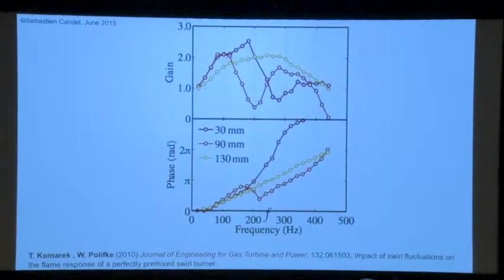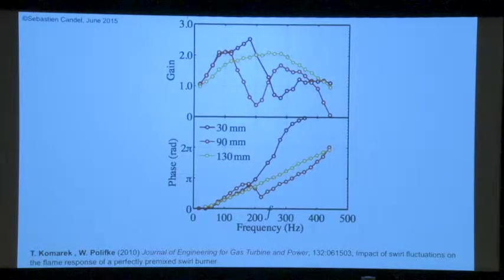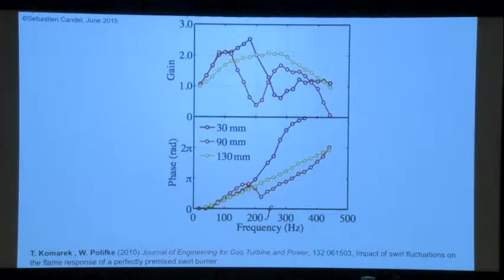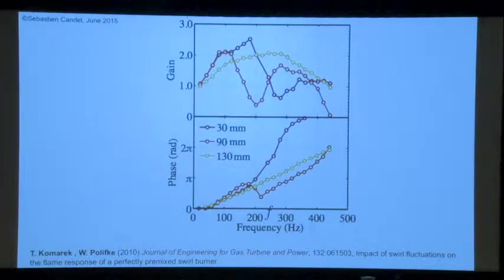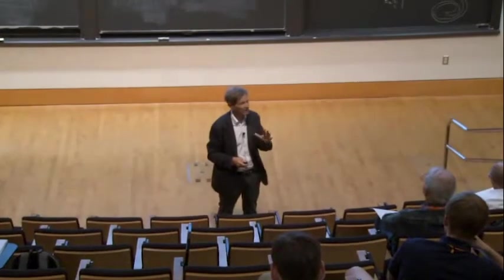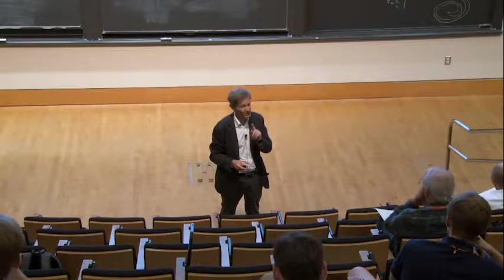What Komarek and Polifke did was move the position of the swirler inside the duct, and they see that this changes the gain. If the swirler is at 130 mm, you have essentially something like that. If at 90 mm, you have something like that. And if at 30 mm, it's like that. Even their phases are changing because of that. They were suspecting there was a convective vorticity wave, but they were not giving the amplitude of that wave. The amplitude is obtained using the actuator disk theory, and we gave the amplitude.